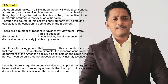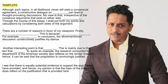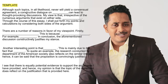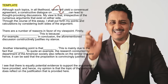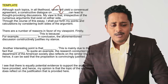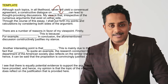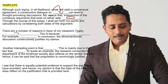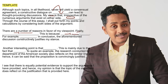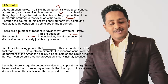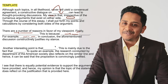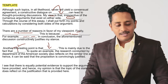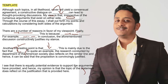This is the template I've got — I've shared this in many videos. It starts: 'Although such topics in all likelihood never will yield a consensual agreement, a constructive dialogue on...' — write a topic sentence. 'My view is that irrespective of the numerous arguments that exist on either side...' — you state your viewpoint. Then: 'There are a number of reasons in favor of my viewpoint. Firstly, [one sentence]. This is because [another sentence]. For example, [one more sentence]. In conclusion, the aforementioned discussion constructively justifies my stance. Another interesting point is that [one sentence]. This is mainly due to the fact that [one sentence].' The rest of the essay you have to memorize and finish.